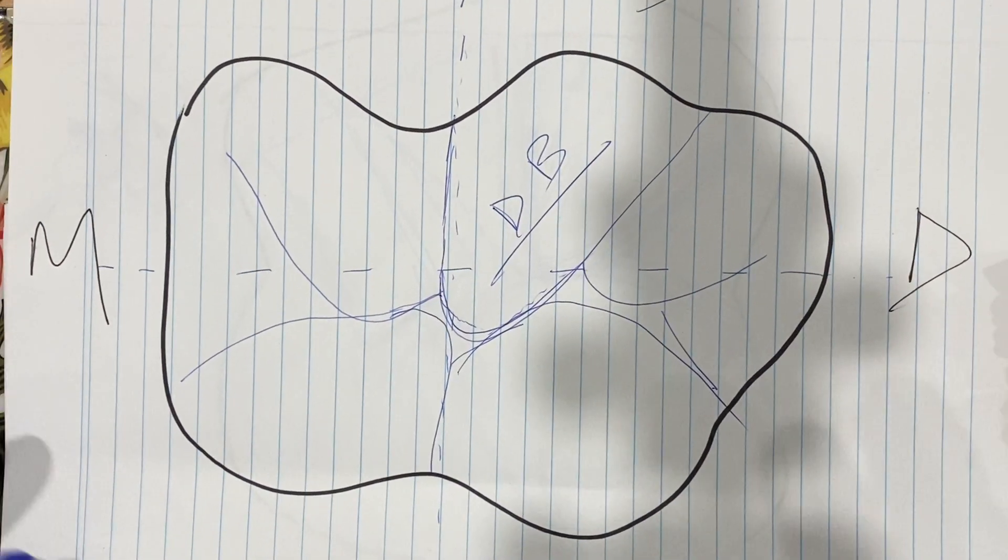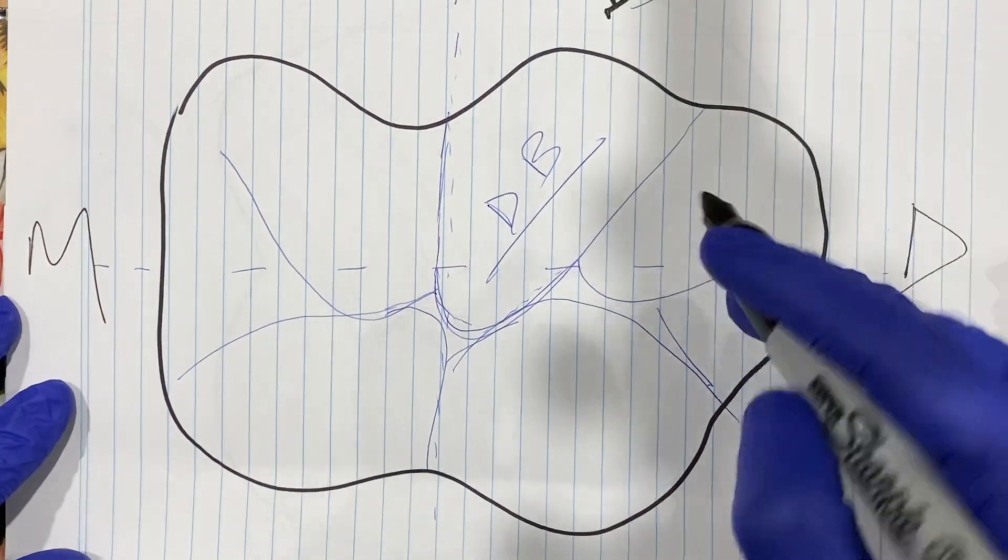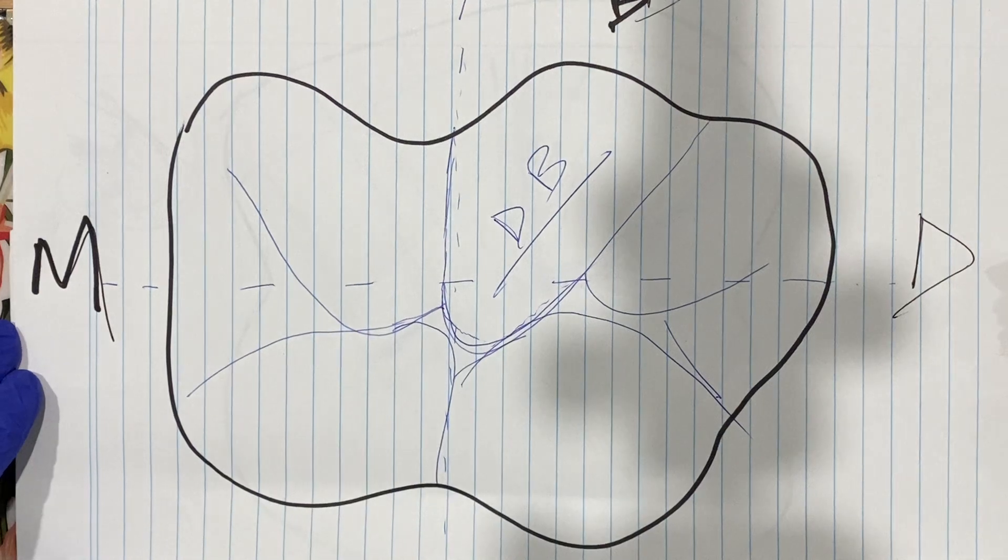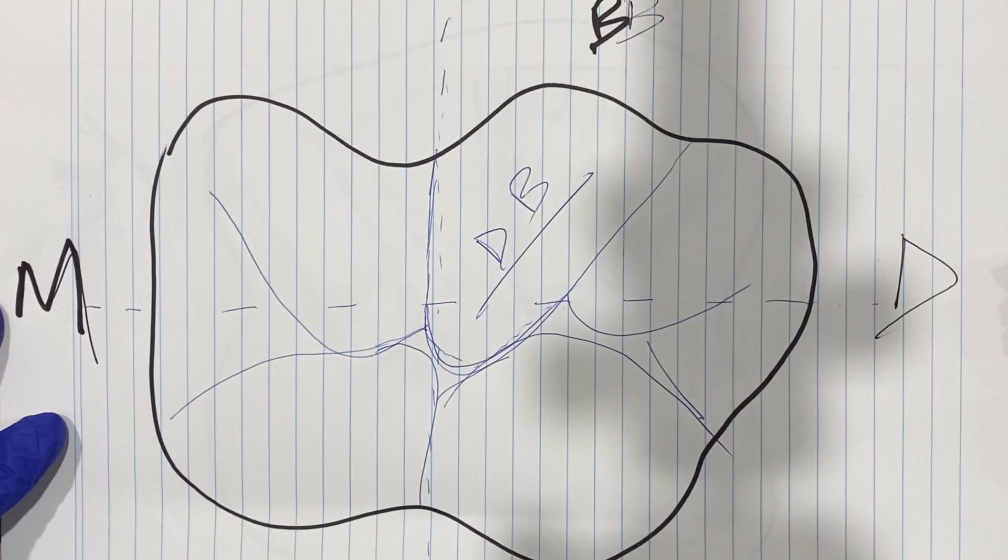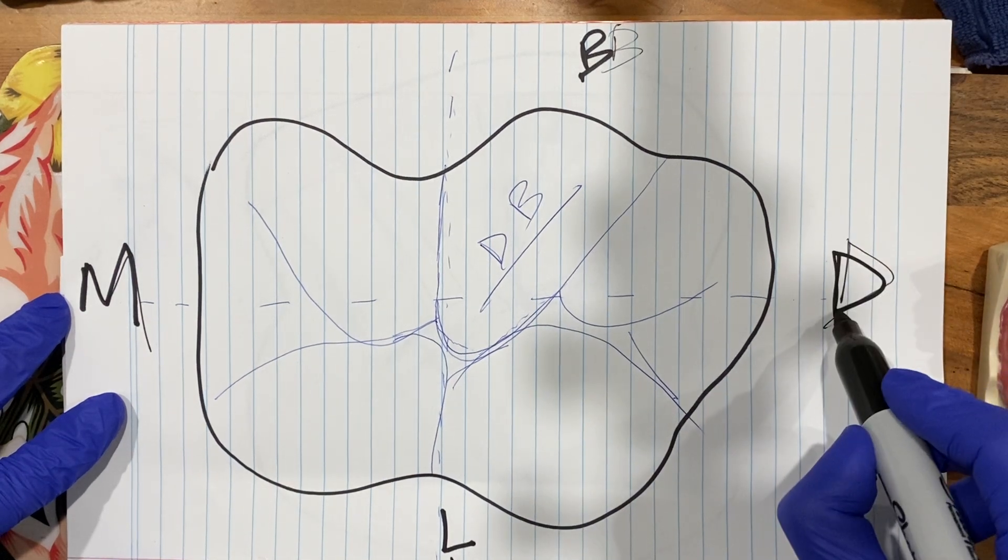So look at this photo here. This is your buccal, this is the mesial, this is the lingual, this is the distal. This is the four-six we are talking about.